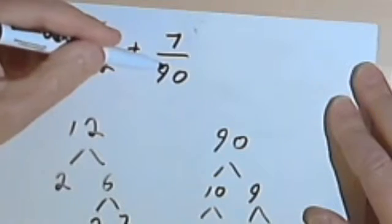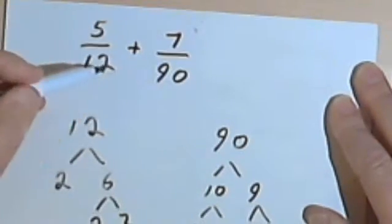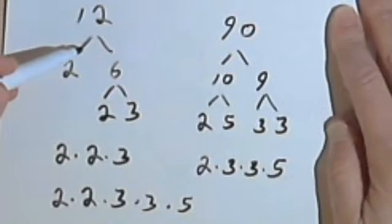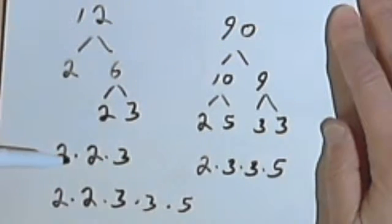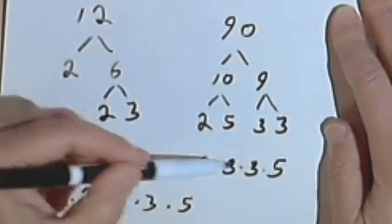I took the two fractions. I took the denominator for each fraction and made a factor tree for each denominator. And that way I found all the factors of the first denominator and the factors of the second denominator.